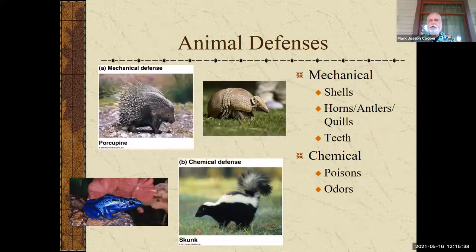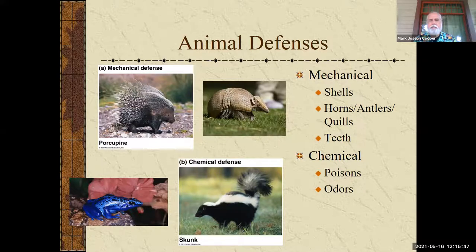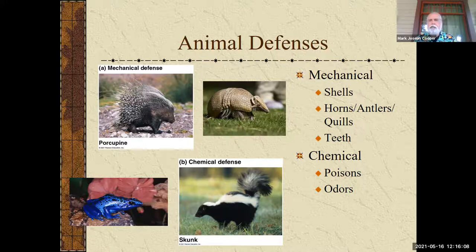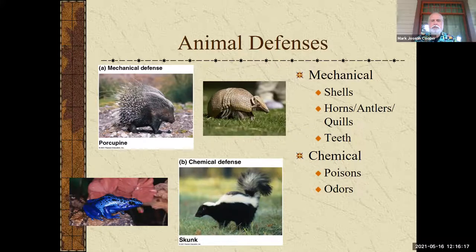Animals have evolved ways of protecting themselves. Mechanical defenses would include shells, like the armadillo on the right — you can think of tortoises, snails, and mollusks like clams and oysters. Then we have horns, antlers, and quills — quills are just modified hairs like you'd see in a porcupine — and everybody knows teeth. For chemical animal defenses, there are poisons like the poison arrow frog on the left, and then odors put out by skunks. These are ways animals defend themselves from predators.